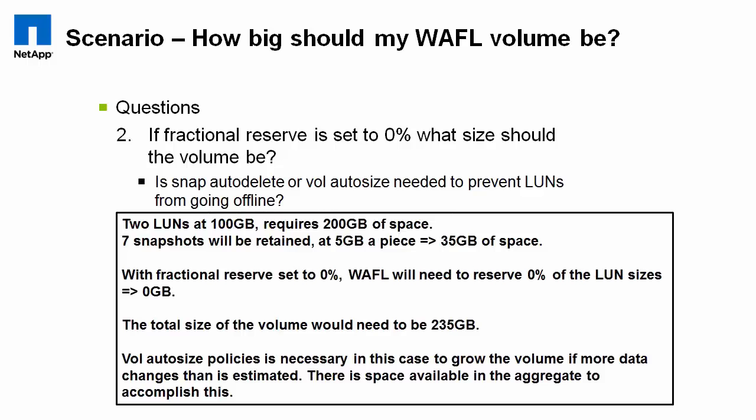If we set fractional reserve to zero, how does that change it? First let's answer the first question. 2x plus delta in this case is going to be approximately 435 gigabytes — because two times the sum of the size of all LUNs: we've got two 100-gigabyte LUNs, so that's 2 times 200 equals 400, and then 5 gigabytes a day of delta times 7 snapshots equals 35, so 435 is approximately how big that volume would need to be to support two 100-gigabyte LUNs.